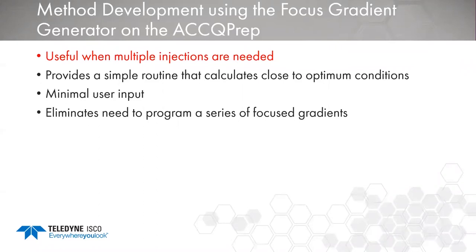When should we invest time in method development? It's most useful when doing multiple injections, since time savings are multiplied by the number of runs. The Acuprep software now provides a simple routine that calculates close-to-optimum conditions based on one scouting run — from either an analytical system or a run on the Acuprep itself. It requires minimal user input, no calibration if done on the Acuprep, and it pinpoints specifically on your peak of interest rather than just giving you a zone, eliminating the need to program a series of focus gradients manually.